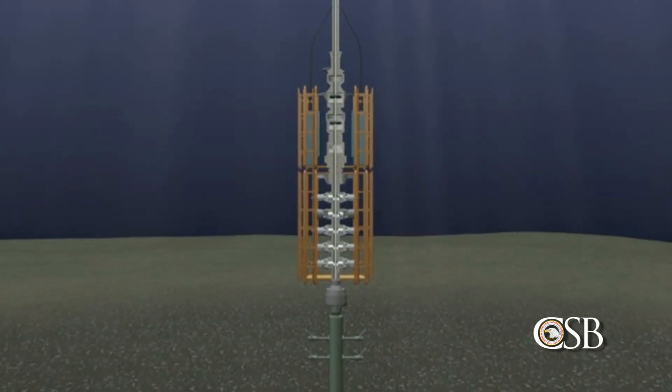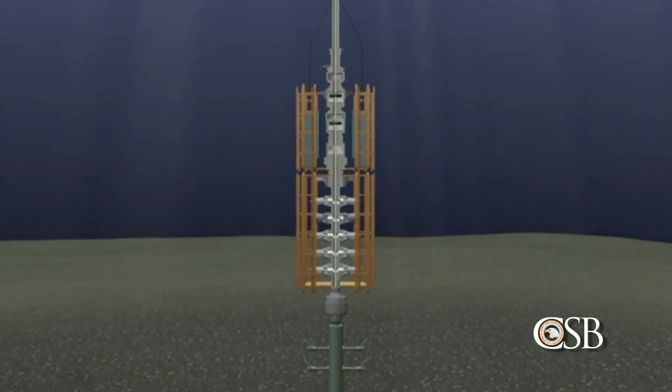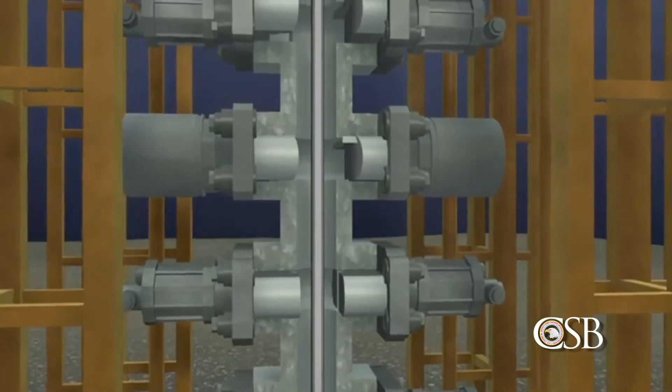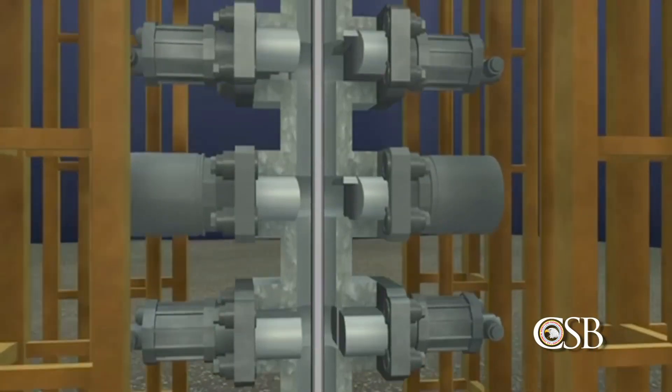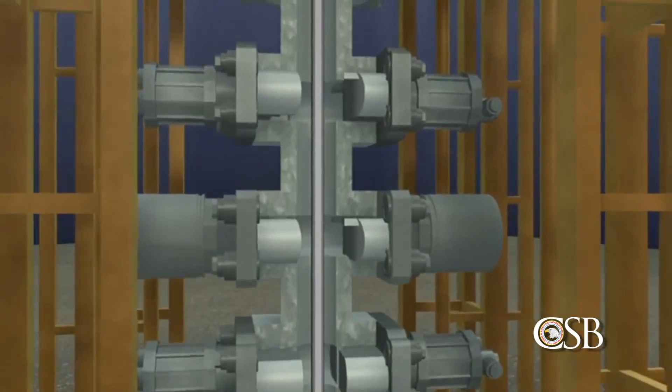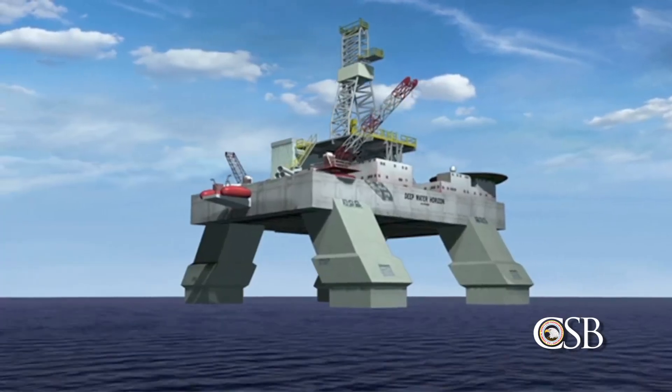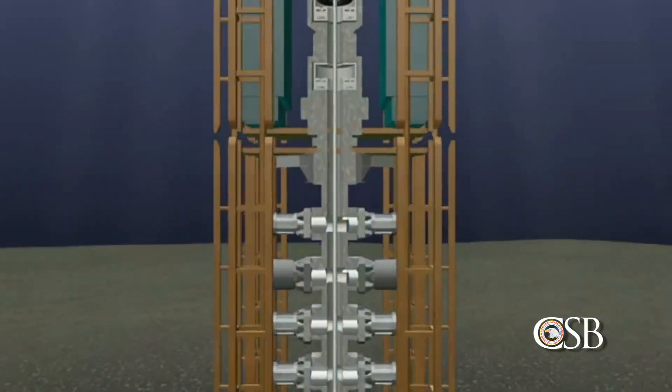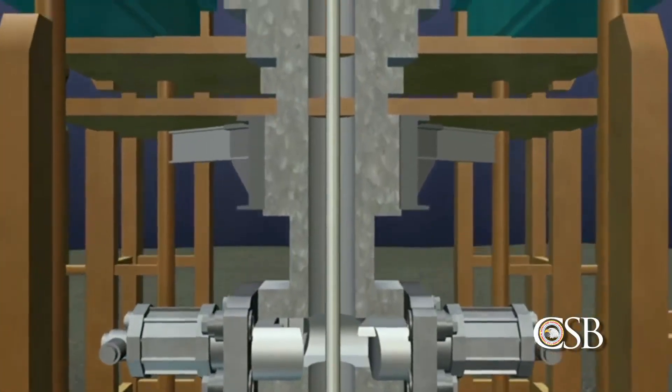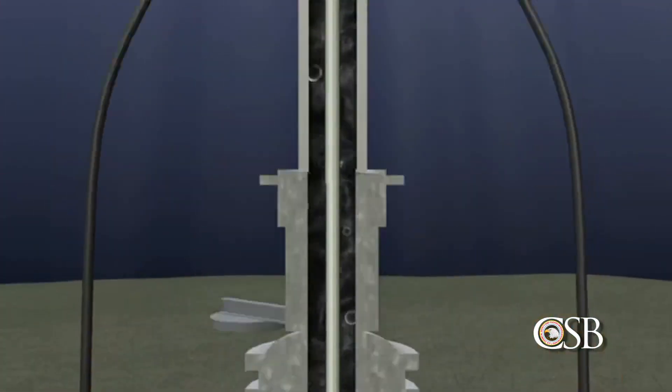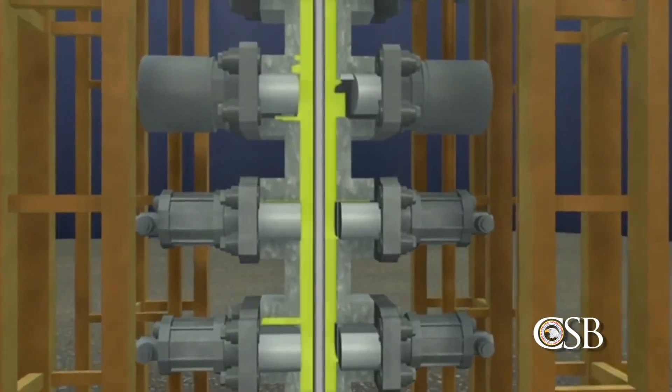The BOP is a complex electrically and hydraulically powered device that is essential for controlling the well and, in an emergency situation, preventing a disaster on the platform high above on the sea surface. The BOP is connected to the rig by a large diameter pipe called a riser. If a kick occurs, the blowout preventer is designed to prevent flammable oil and gas from traveling up the riser to the drilling rig. This is done by sealing the area around the drill pipe, known as the annular space.